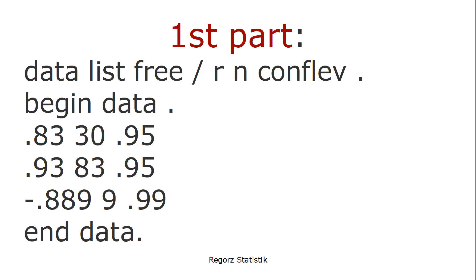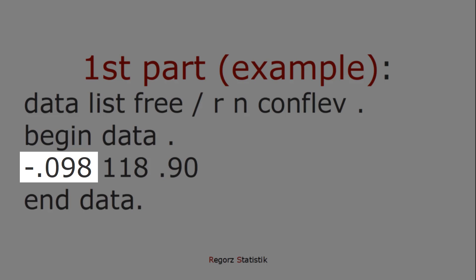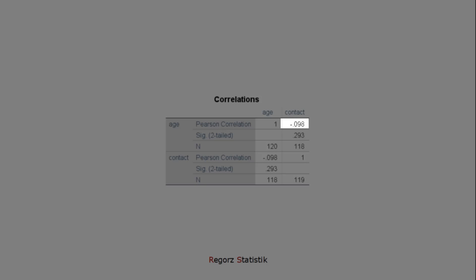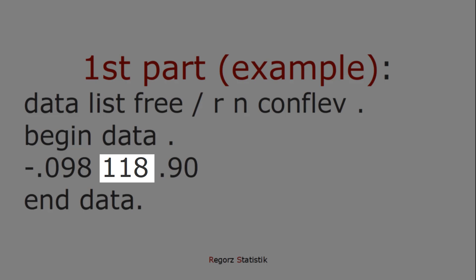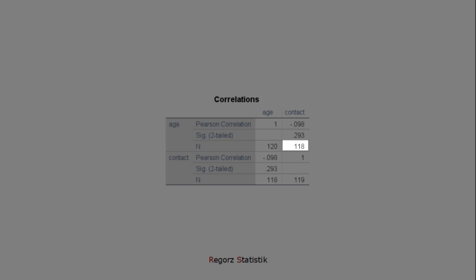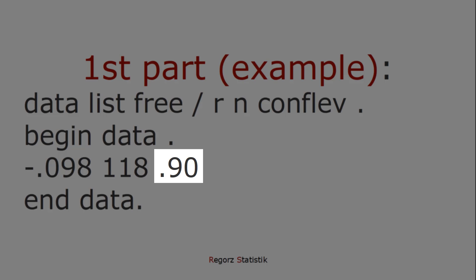So for our example, here we have our correlation. Here we have our sample size. And here we have to put in 0.90 as our confidence level.